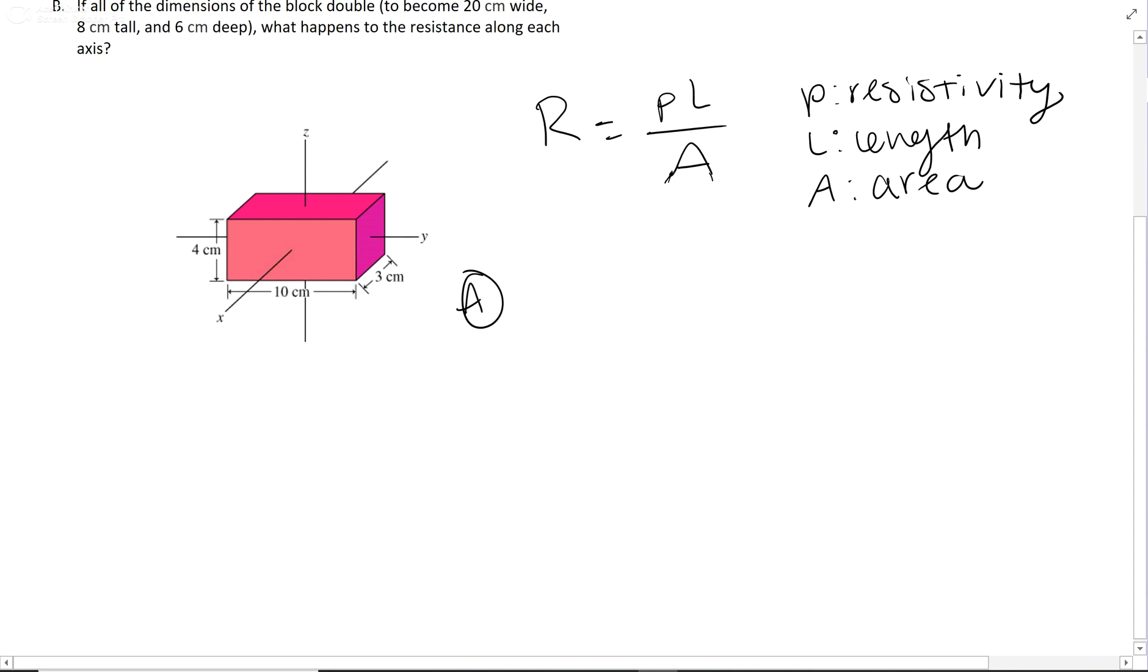So the smallest area we're going to see is this one right here, which is 3 by 4, and that is along the Y axis. So Y is going to be the one with the largest resistance because it has the smallest area.